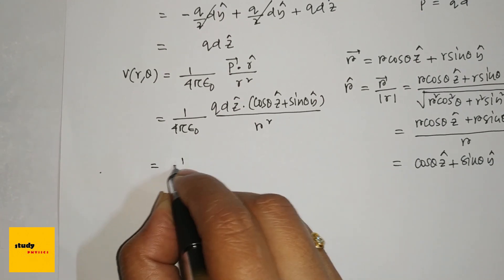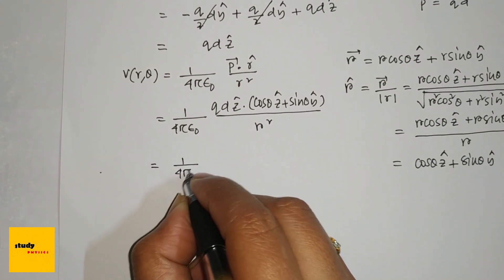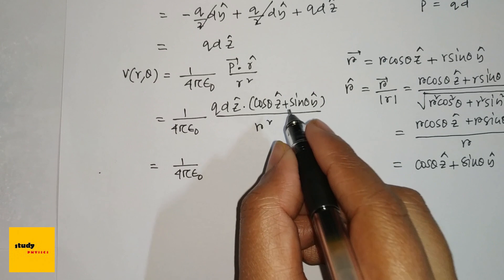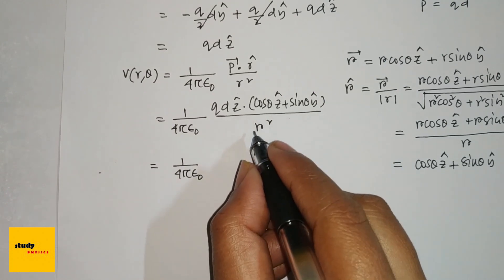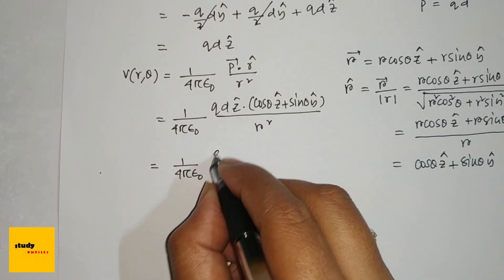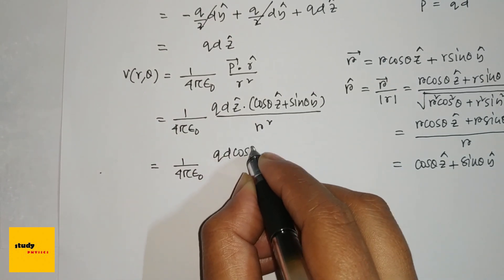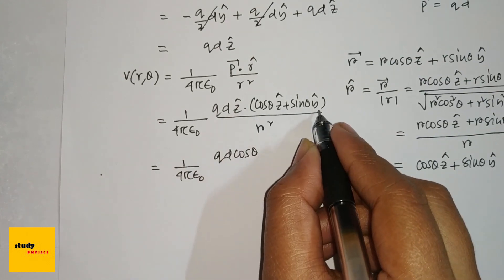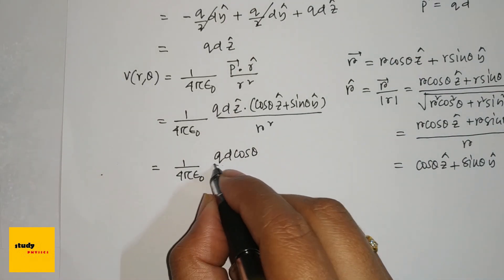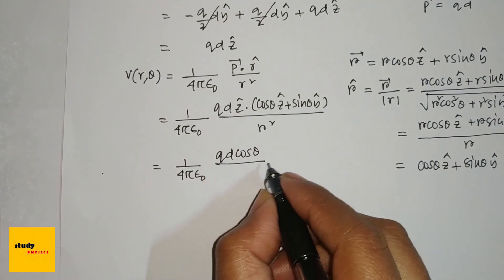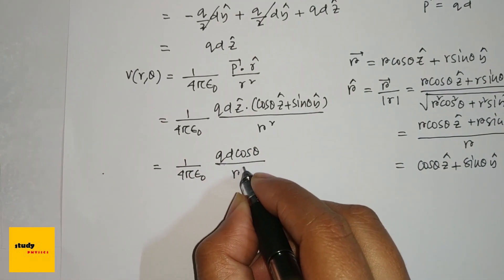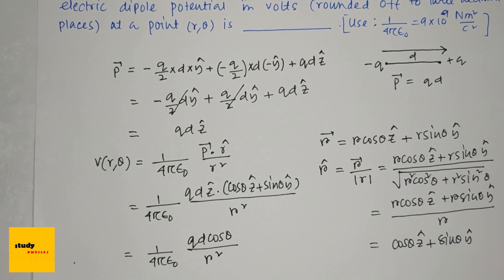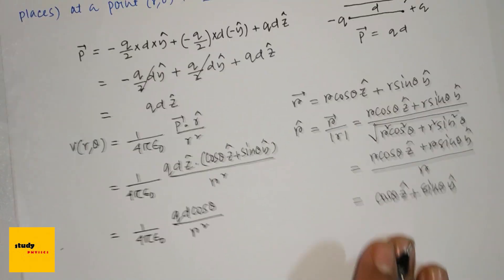Since z-cap dot z-cap equals 1, and z-cap dot y-cap equals 0, this simplifies to 1 divided by 4 pi epsilon-naught times q d cos theta divided by r squared.